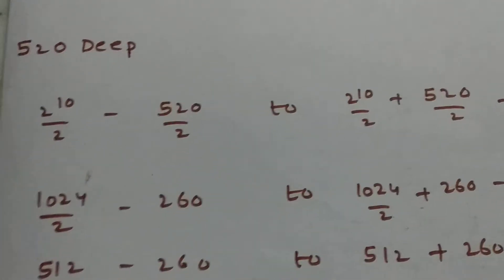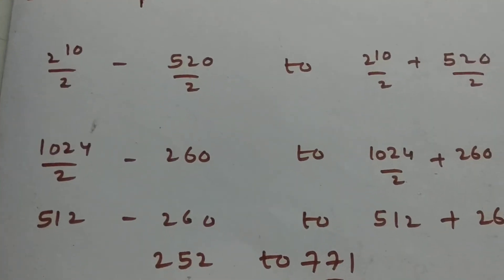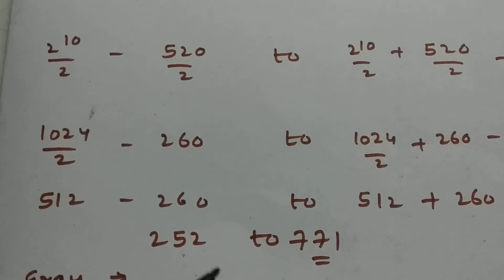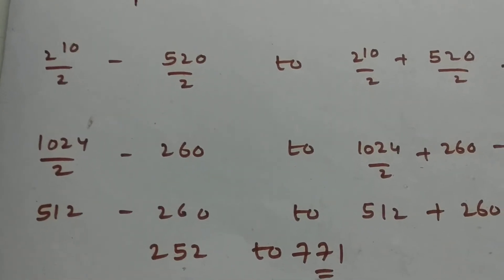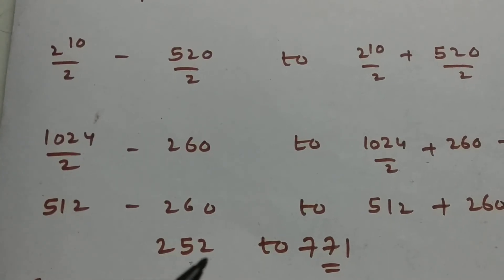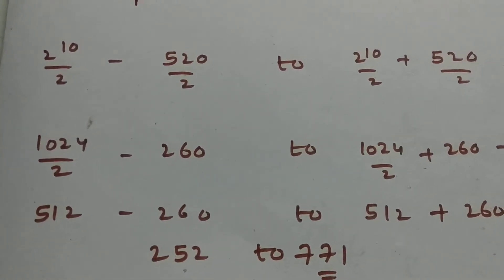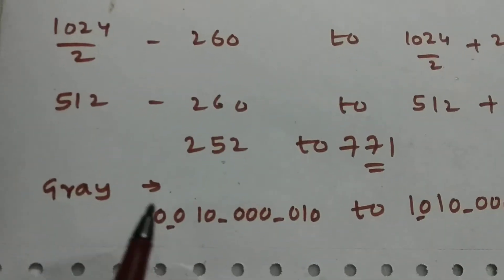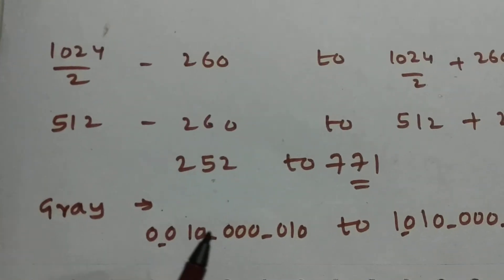So we will get a value, we can do the calculations you can see over here. The value will be 252 to 771. So we will convert this 252 into gray and 771 into gray. As you can see, this is the value of 252 in gray.